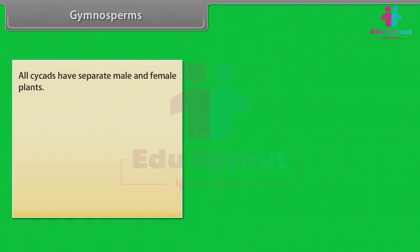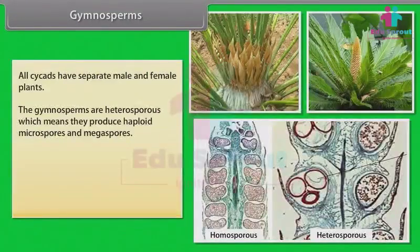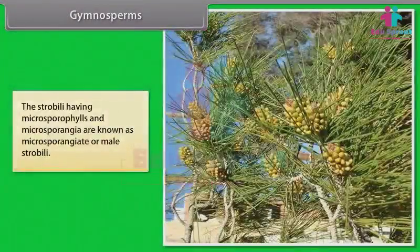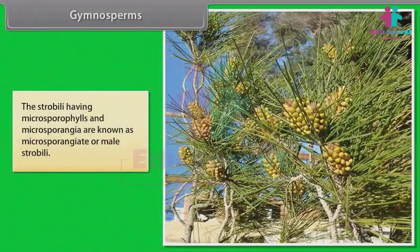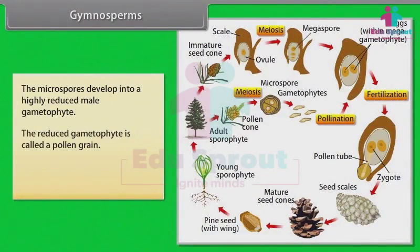All cycads have separate male and female plants. The gymnosperms are heterosporous, which means they produce haploid microspores and megaspores. The two kinds of spores are produced within sporangia that are borne on sporophylls, which are arranged spirally along an axis to form strobili or compact cones. The strobili having microsporophylls and microsporangia are known as microsporangiate or male strobili. The microspores develop into a highly reduced male gametophyte, called a pollen grain. Pollen grains are developed within the microsporangia.